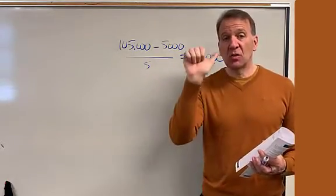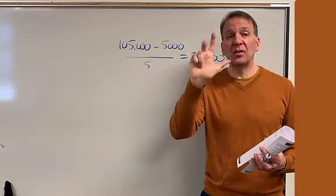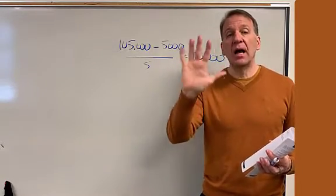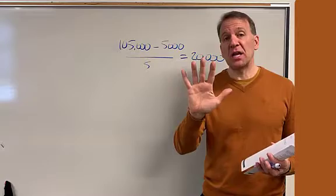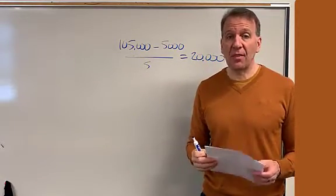We're going to have it for five years. So $20,000, $40,000, $60,000, $80,000, $100,000 of depreciation over five years. That's the straight line method.